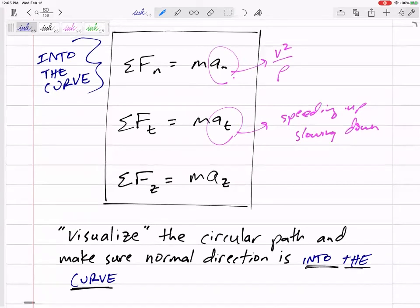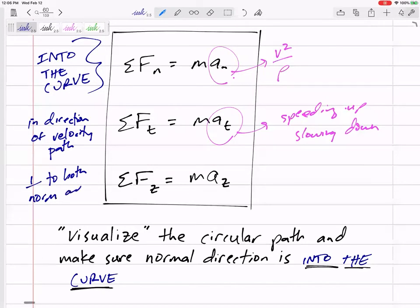So normal direction is into the curve, the tangential direction is in the direction of the velocity, in the direction of the path. And then the other direction, let's just say it's perpendicular to both normal and tangential.